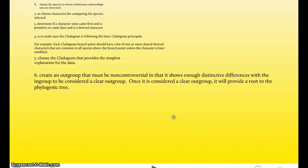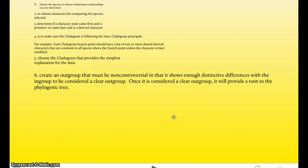Step six, create an outgroup that must be non-controversial, in that it shows enough distinctive differences with the in-group to be considered a clear outgroup. So what this is saying is, you must have an outgroup in your cladogram. You must have an in-group and an outgroup, and the outgroup sometimes is controversial. But you need to make sure that your outgroup is not controversial and that it lacks the derived characters. And the reason why an outgroup is so important is because it provides a root to the phylogenic tree.